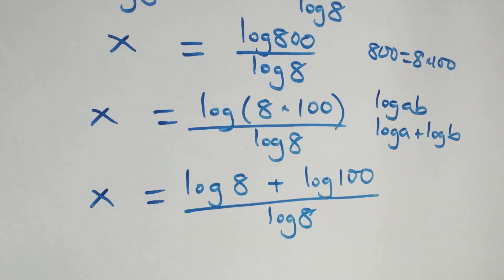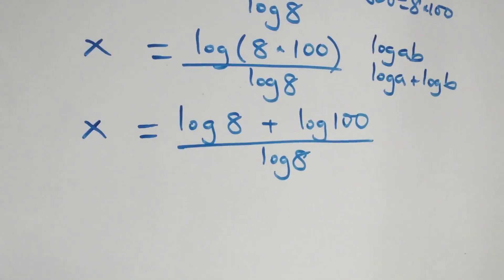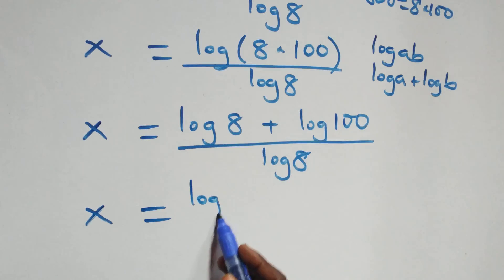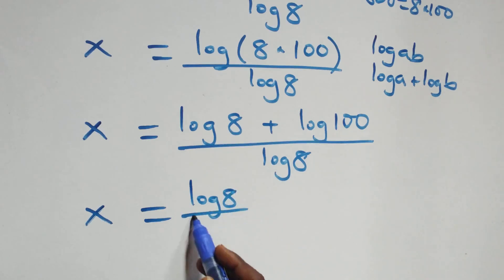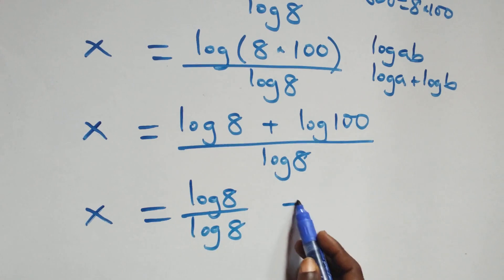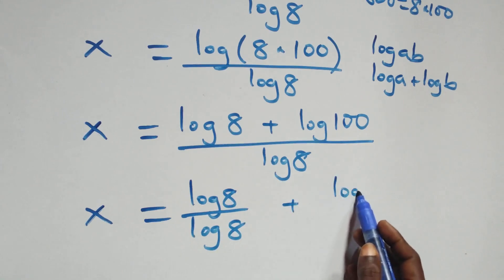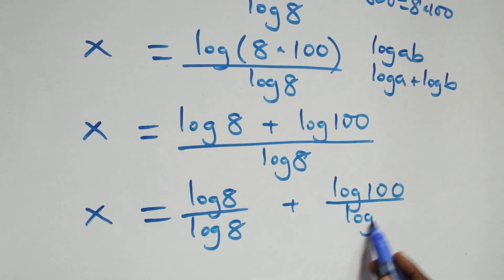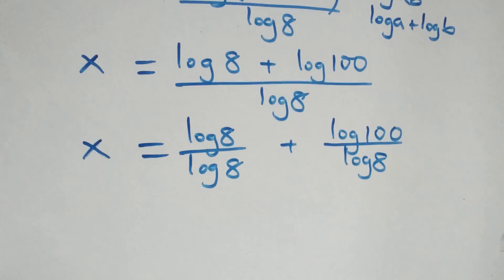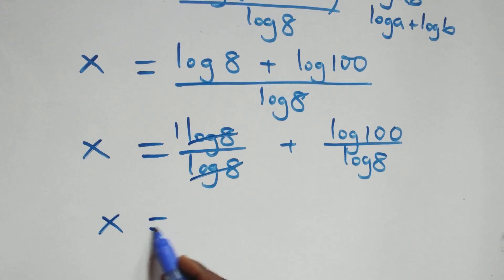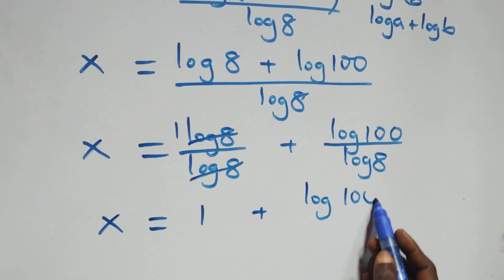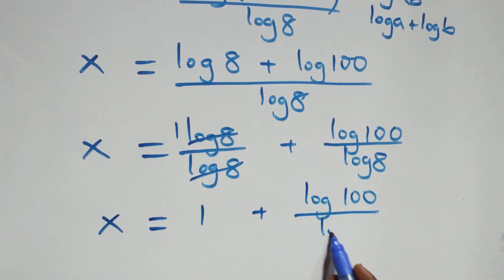Applying the log product rule, log(8 × 100) = log 8 plus log 100. So we have x equals to log 8 over log 8 plus log 100 over log 8. The log 8 terms cancel each other to give 1, which implies x equals to 1 plus log 100 over log 8.